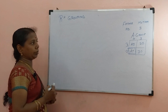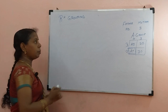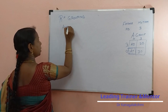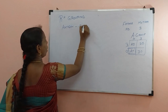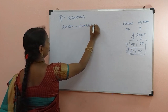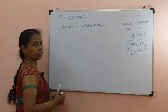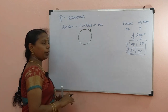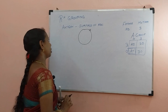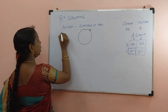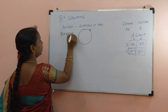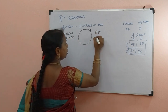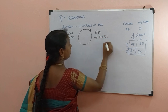Now we will proceed to RH grouping. In most of us — 80% of Indians — there is one more antigen present on the surface of RBC, additionally present. This is what we call the RH antigen. Maybe A blood group or B blood group — it is additionally present. As it is obtained from the Rhesus monkey, it is called the RH factor. It was also discovered in 1940 by Karl Landsteiner, who classified the blood groups.